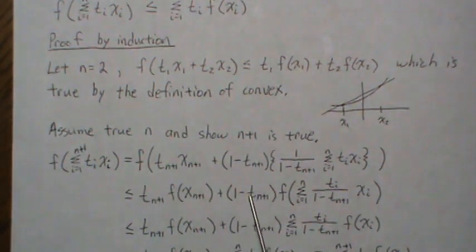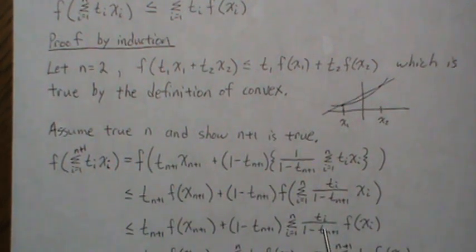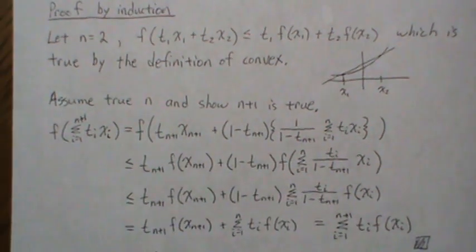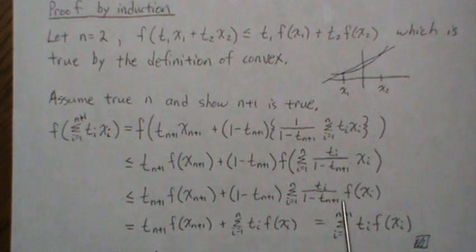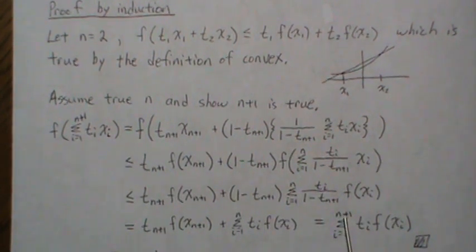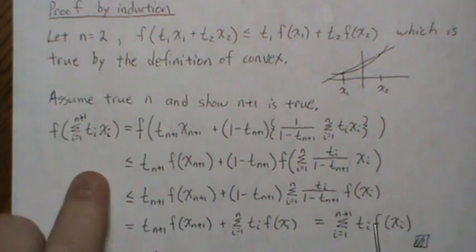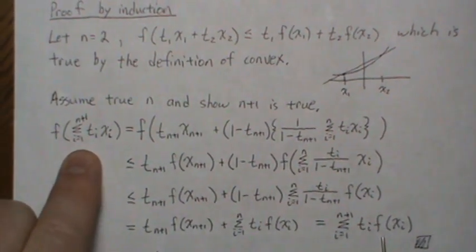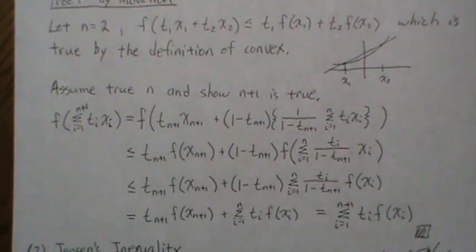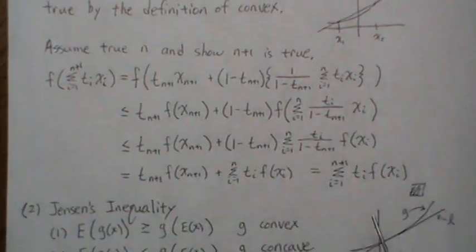Applying Jensen's inequality brings things down: the denominator (1 - t_{n+1}) is not indexed by i so it comes out and cancels, and we're left with the sum of t_i * F(x_i) from i=1 to n+1. That's exactly what we wanted to show, so the inequality is proven by induction.